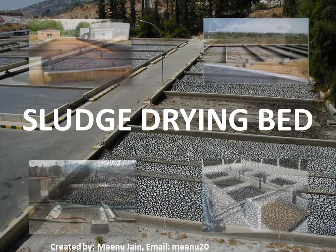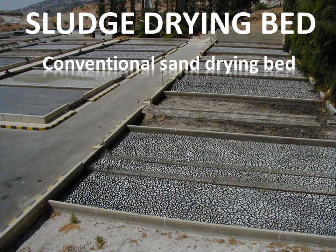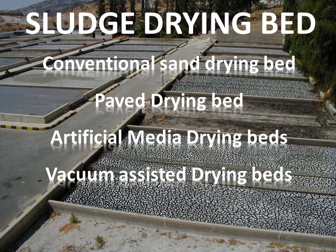The next sludge dewatering equipment is the sludge drying bed, typically used to dewater digested biosolids and settled sludge from plants using extended aeration activated sludge treatment without pre-thickening. Principal advantages are low cost, less attention required, and high solids content in the dried product. Disadvantages include large space requirement, effect of climate on drying characteristics, labor-intensive sludge removal, and insect and odor potential. Five types of sludge drying beds are used: conventional sand drying bed, paved drying bed, artificial media drying beds, vacuum-assisted drying beds, and solar drying beds.